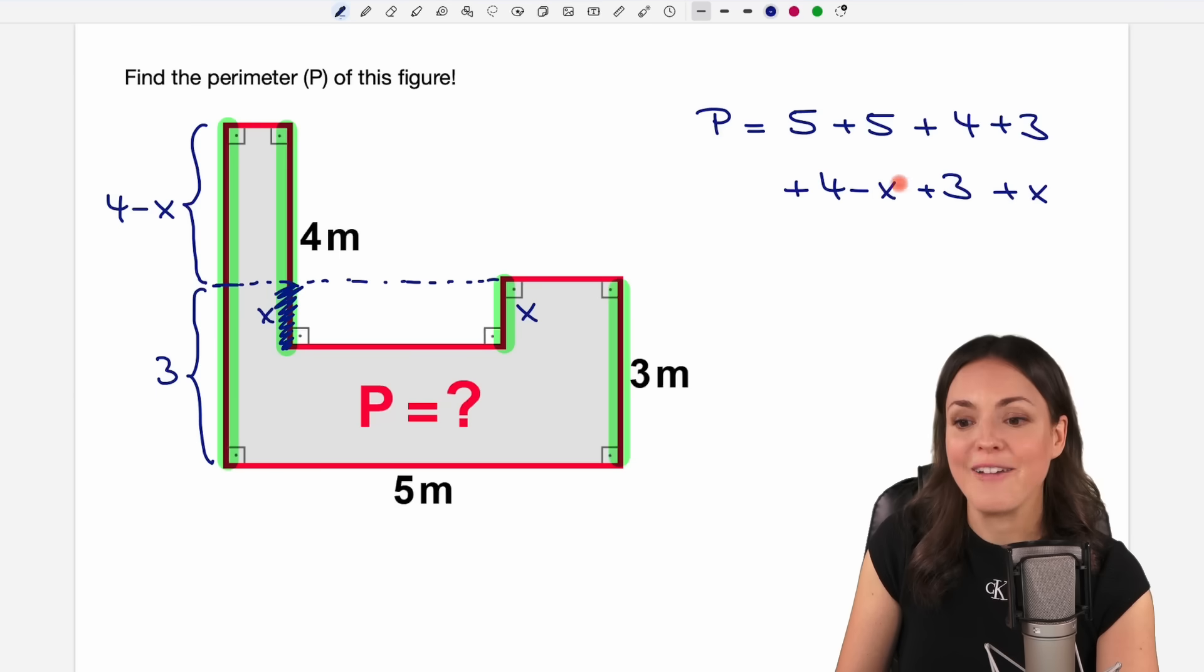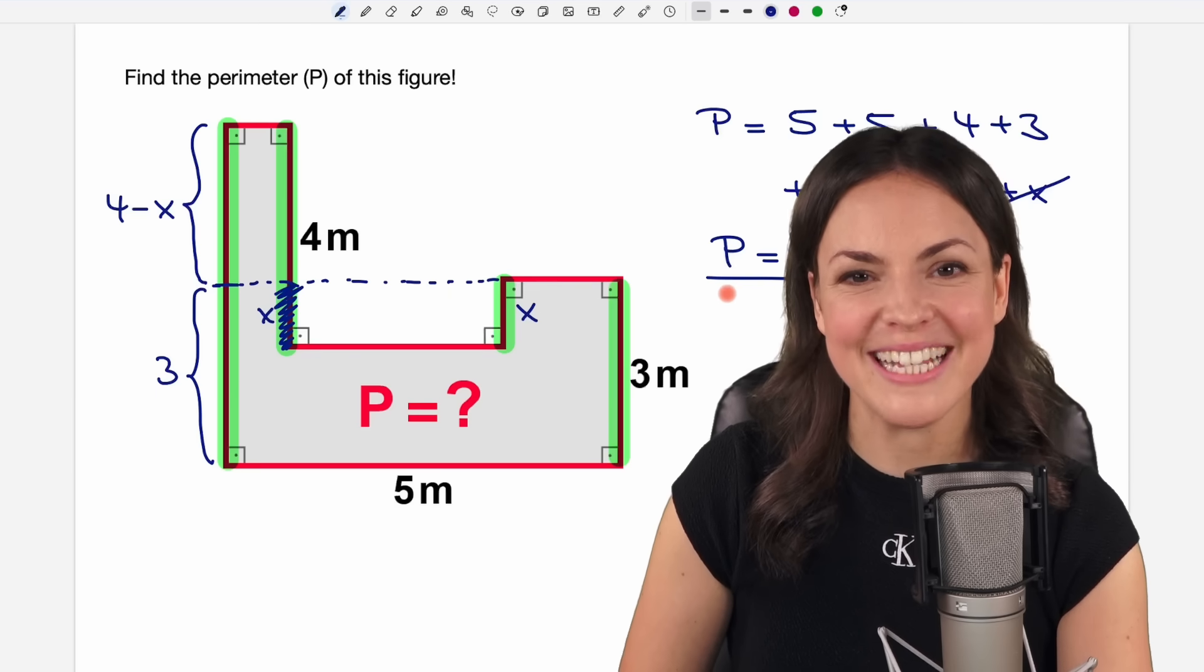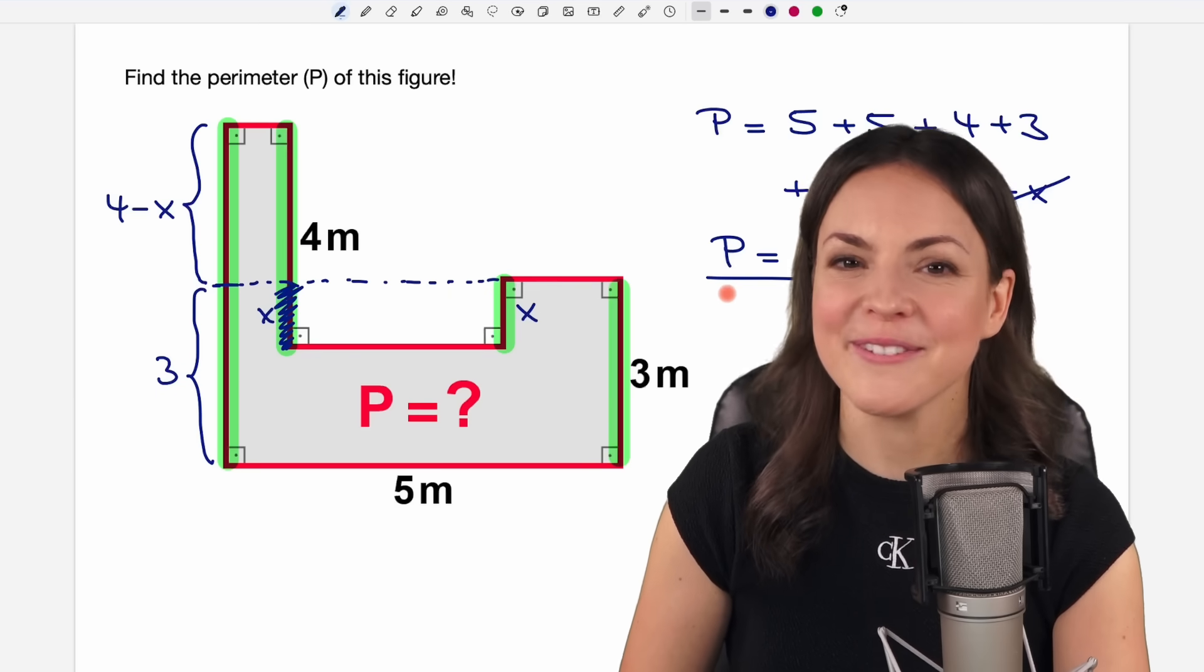And the good thing is we have minus x plus x - it just cancels out, and we can find the perimeter by adding: five plus five is 10, 14, 17, 21, 24. And thus we found it, although we had this x in here, but it was nice to us. So everything was good. I hope you found the solution as well. Please let me know in the comments and have a wonderful day.